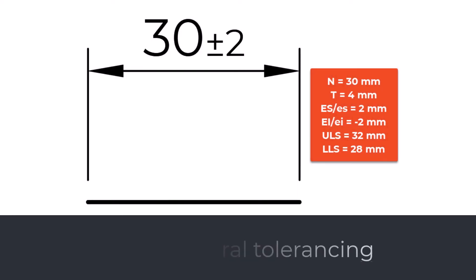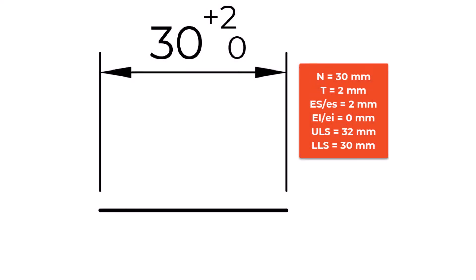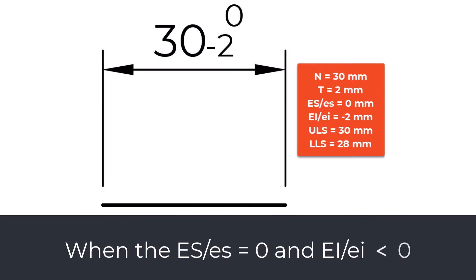Equal bilateral tolerancing: the equal bilateral tolerances specify a nominal value and the limit deviations when ES equals EI. Unilateral tolerancing: the unilateral tolerances specify a nominal value and the limit deviation in one direction only. There are two possible cases: in the first, ES is greater than zero and EI equals zero; in the second, ES equals zero and EI is less than zero.